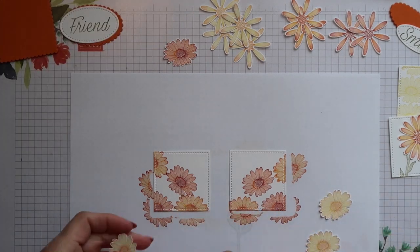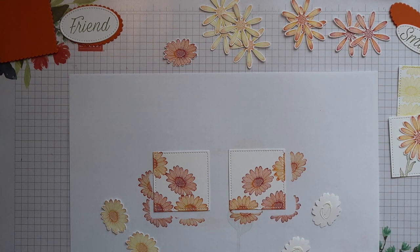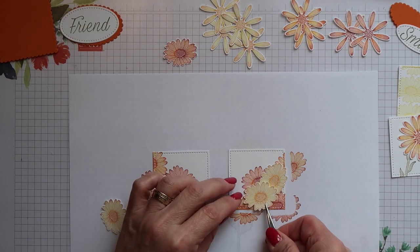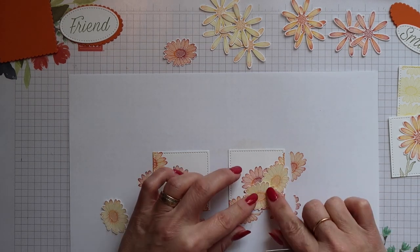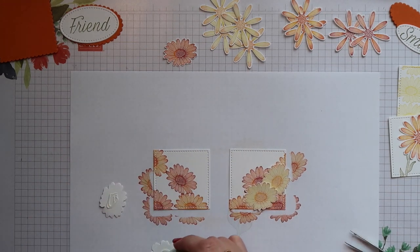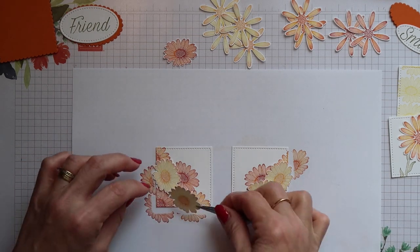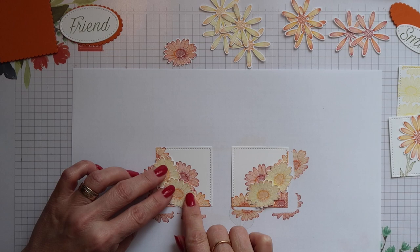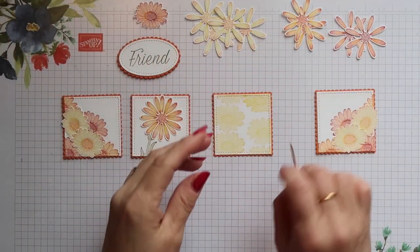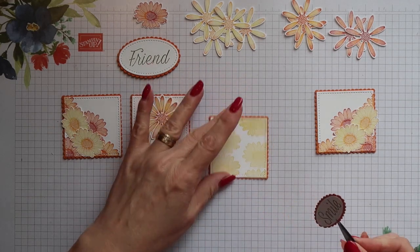I can then go ahead and add the four daffodil delight daisies that I cut out earlier onto these panels. The smile sentiment needs to be added onto the centre of the first panel that I stamped.